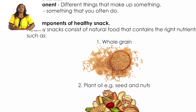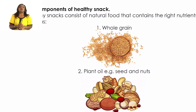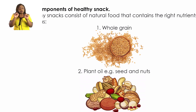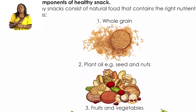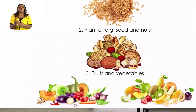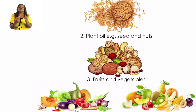List components of a healthy snack. Healthy snacks consist of natural food that contains the right nutrients, such as whole grain, plant oil — for example, seeds and nuts — and fruits and vegetables.